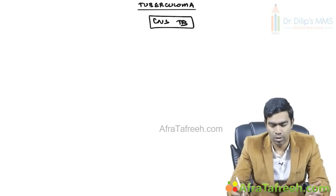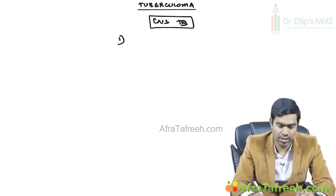There are two classical manifestations in central nervous system tuberculosis. One is the tuberculoma and the second one is tuberculosis meningitis, but many times both may coexist together. It's not that you will get only a tuberculoma or only a tuberculosis meningitis - you can get both at the same time. So first let us see what is meant by a tuberculoma and what are the clinical effects of a tuberculoma.